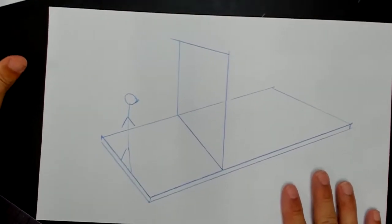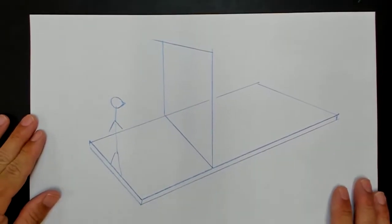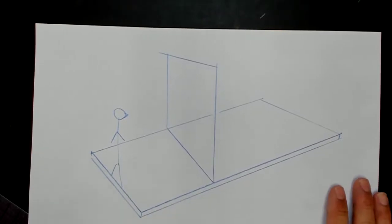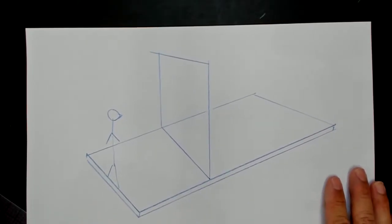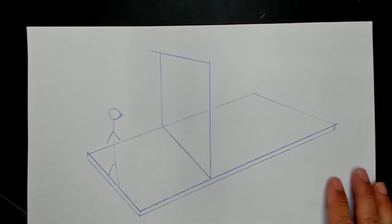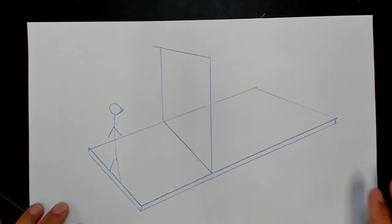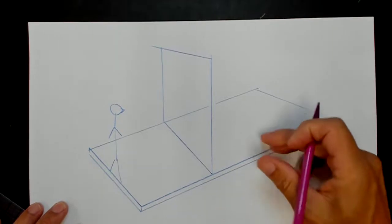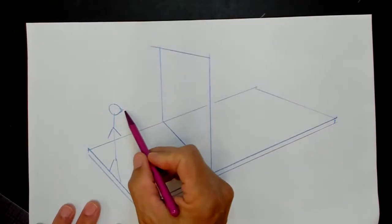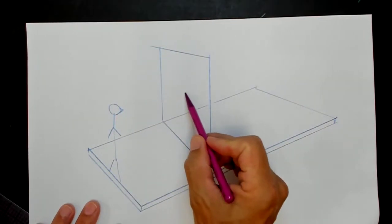Unless you're doing three-point perspective where the viewer is looking up or down, if you're looking straight ahead parallel to the ground, then the center of vision is going to be straight in front of the viewer.